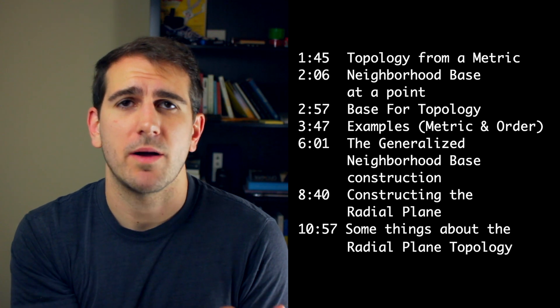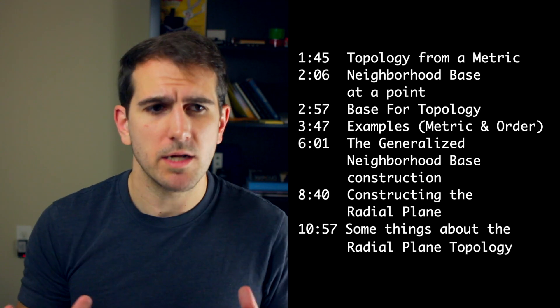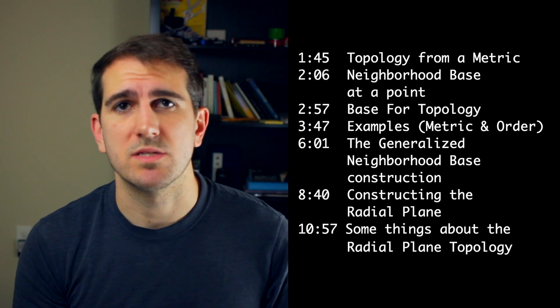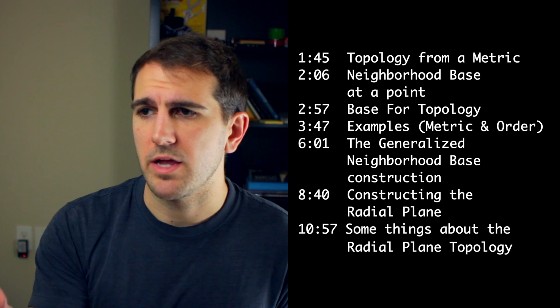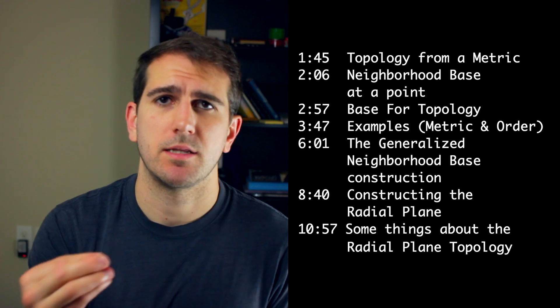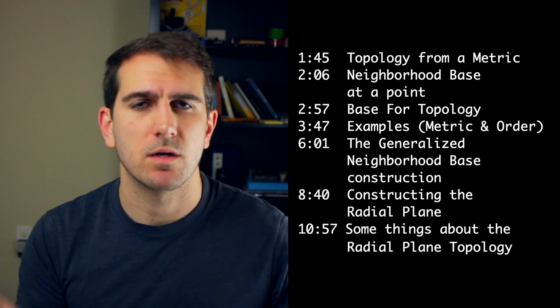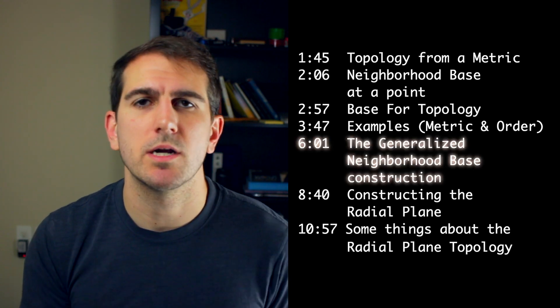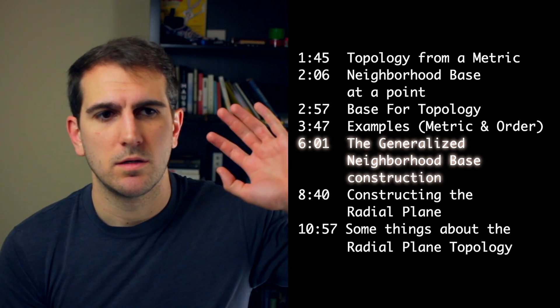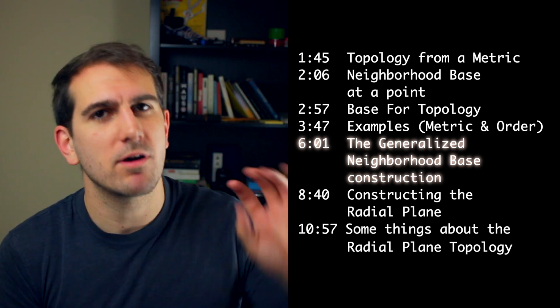This is all of the stuff that I want to talk about today. I want to talk about a method that you can use: given some set and some way you think about what's happening around a point in that set, you can generate a topology. That's called the generalized neighborhood-based construction. In point set topology, it can be helpful to think about what's the fundamental quality of space around a particular point that forms open sets around that point.